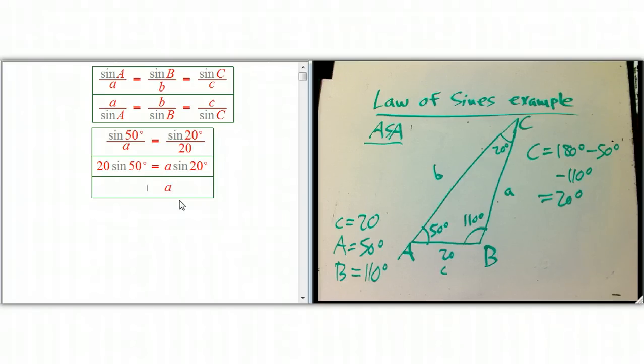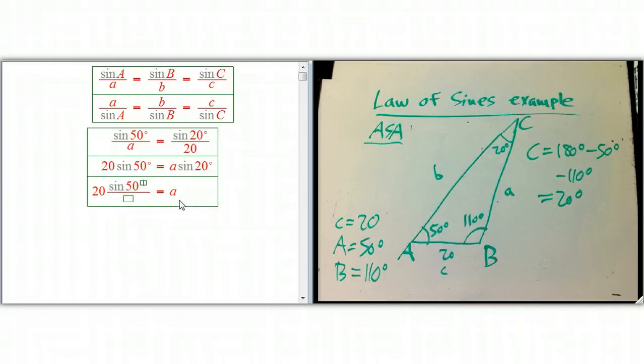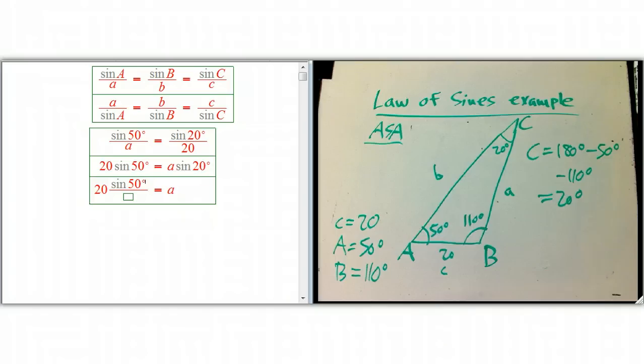And now we can isolate a, let's just put it on this side. So we're getting 20 times a ratio of sines, and that's always what we get. When we solve for one side, it's always going to be another side times a ratio of sines. Not something you have to memorize, but just something to be familiar.